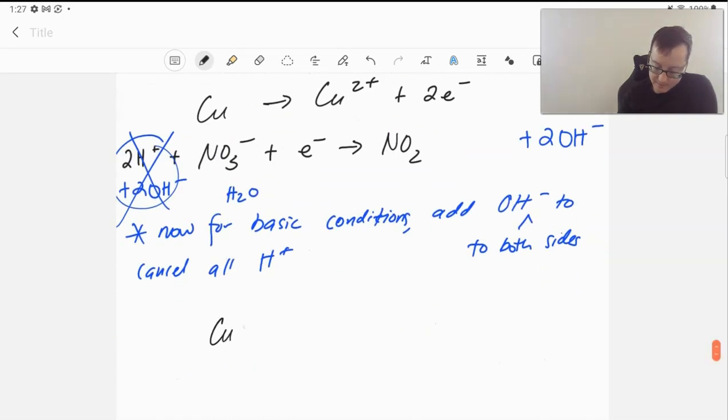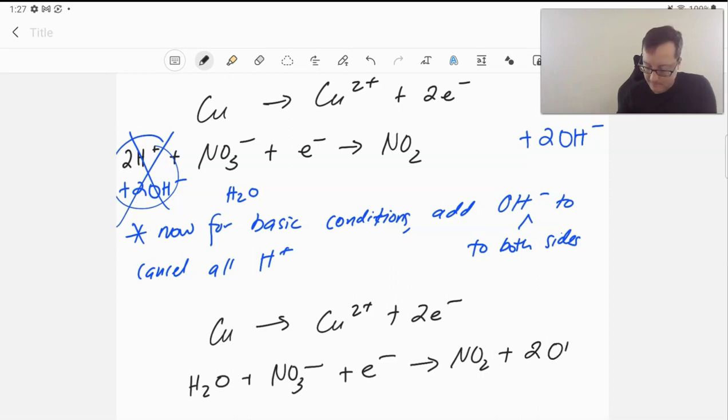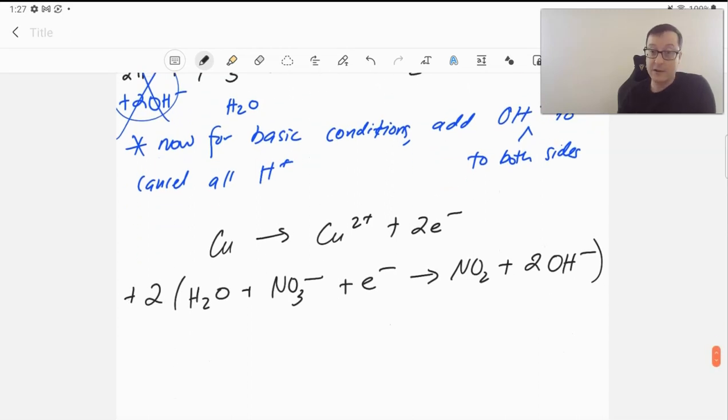Our first reaction, nothing changes, so I'm going to keep that up there. What we did here is we have one water plus nitrate plus a single electron turns into NO2 plus two OH-. All of our oxygen and hydrogen should still be balanced. We just wanted to make things as neat as possible before we add these together.